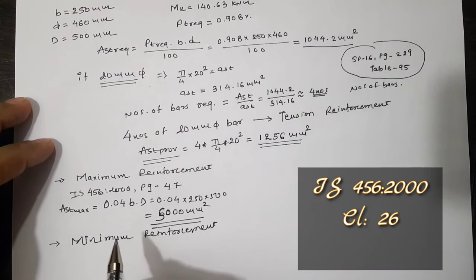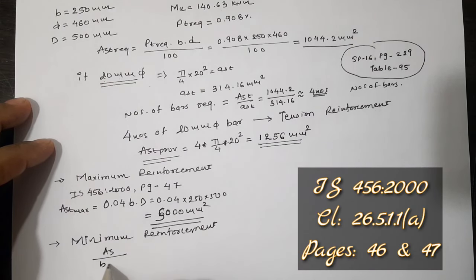And minimum reinforcement according to IS 456 page 47 is given as AST/bd = 0.85/fy, which gives minimum reinforcement of 255.54 mm².